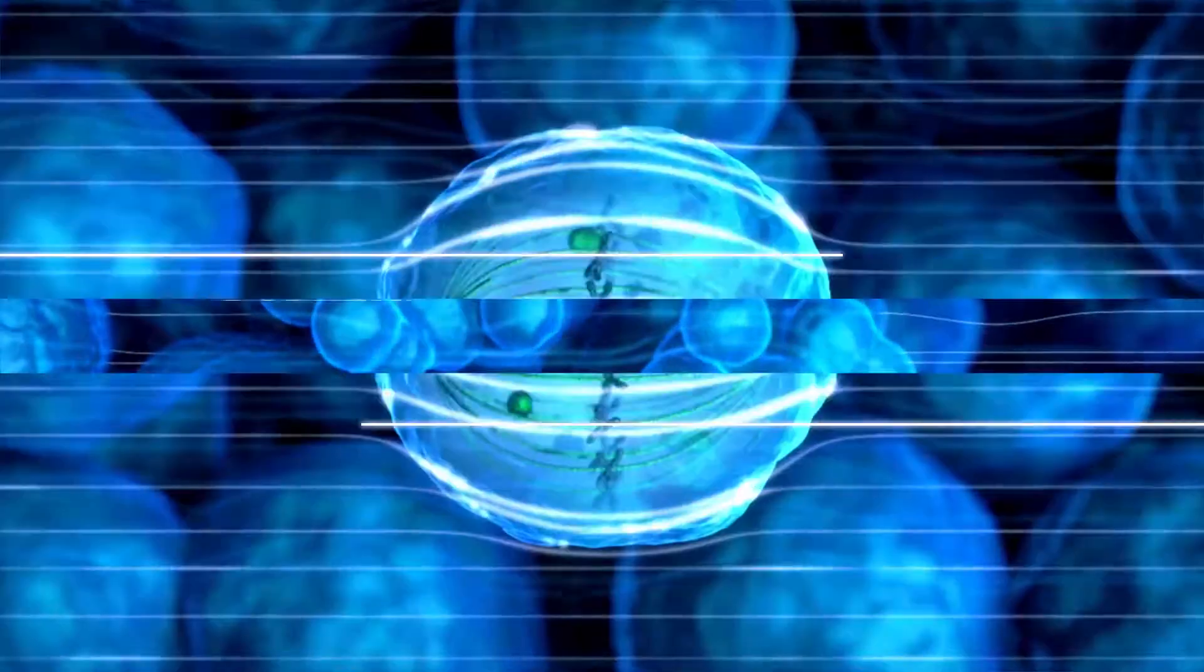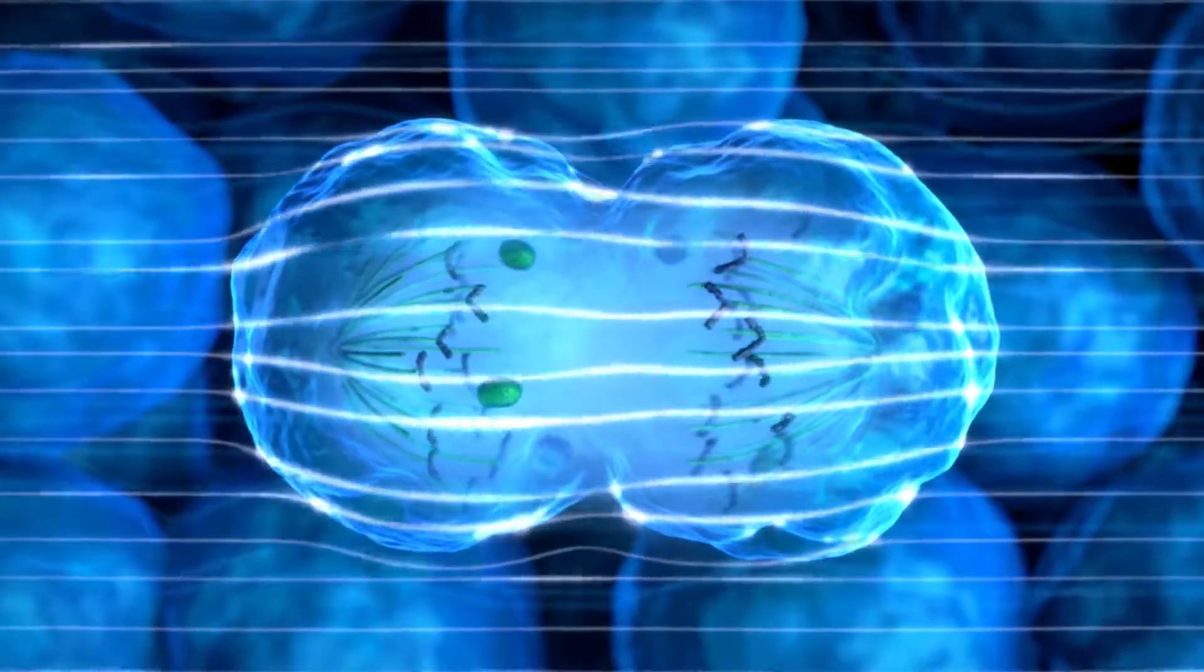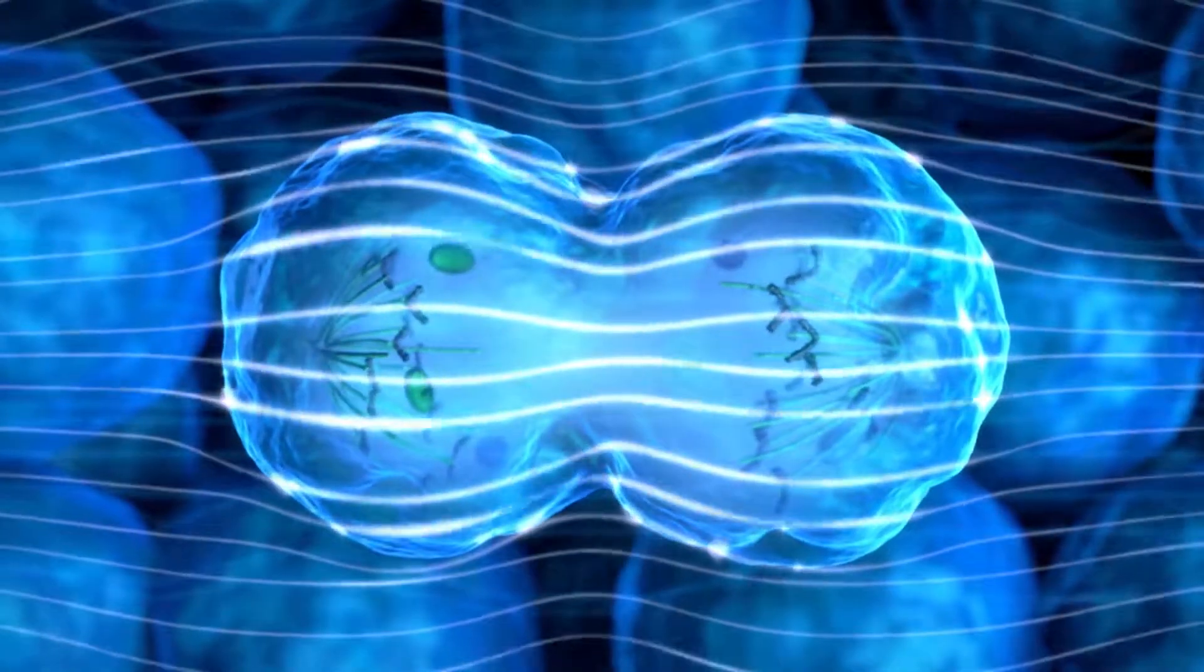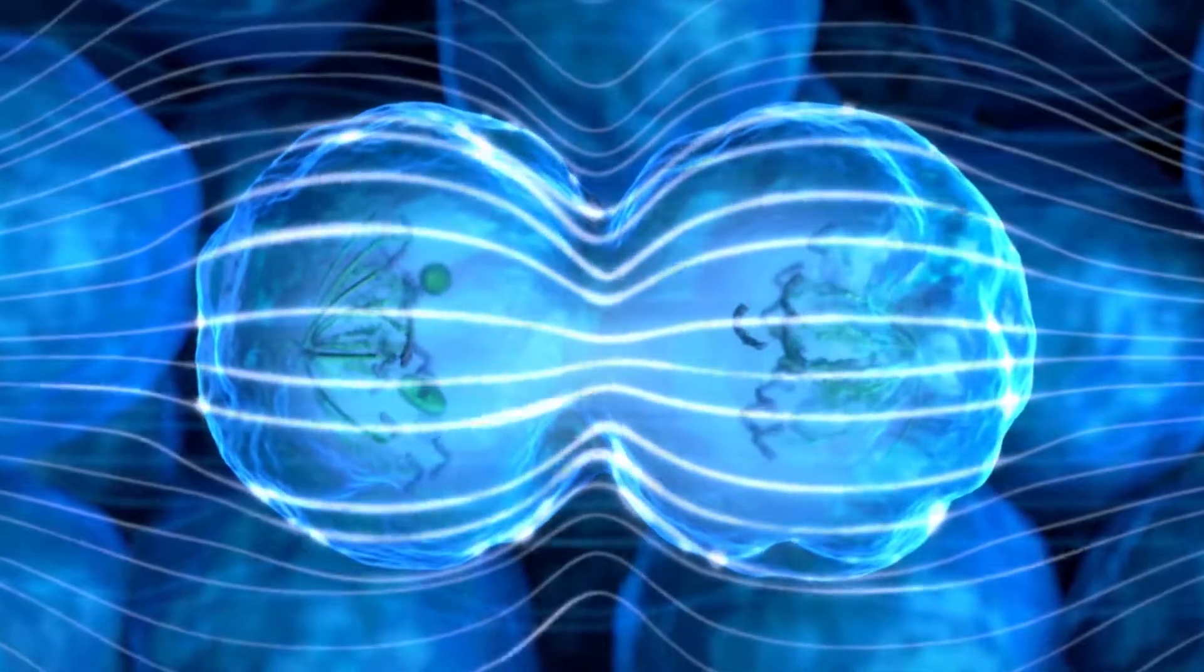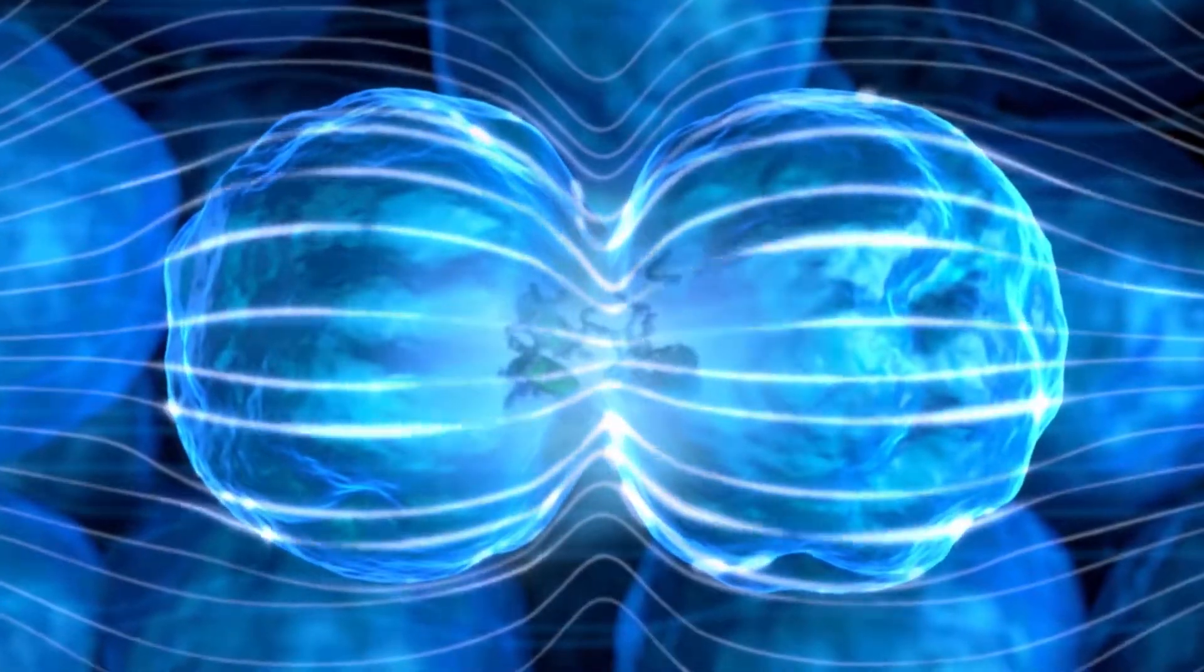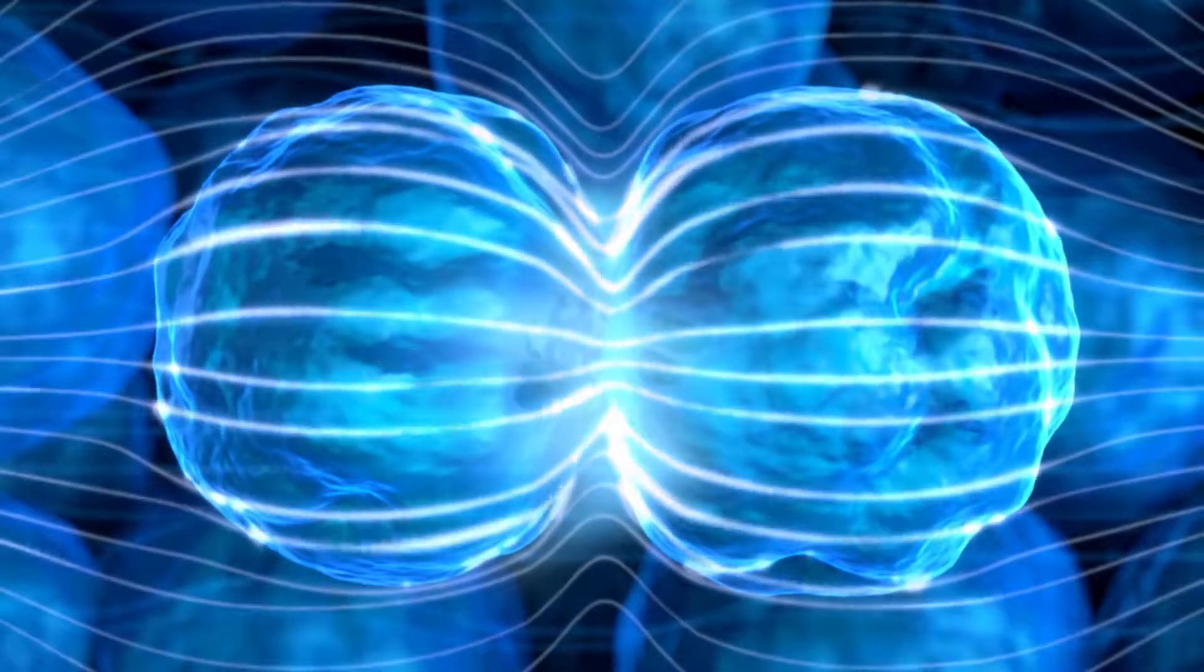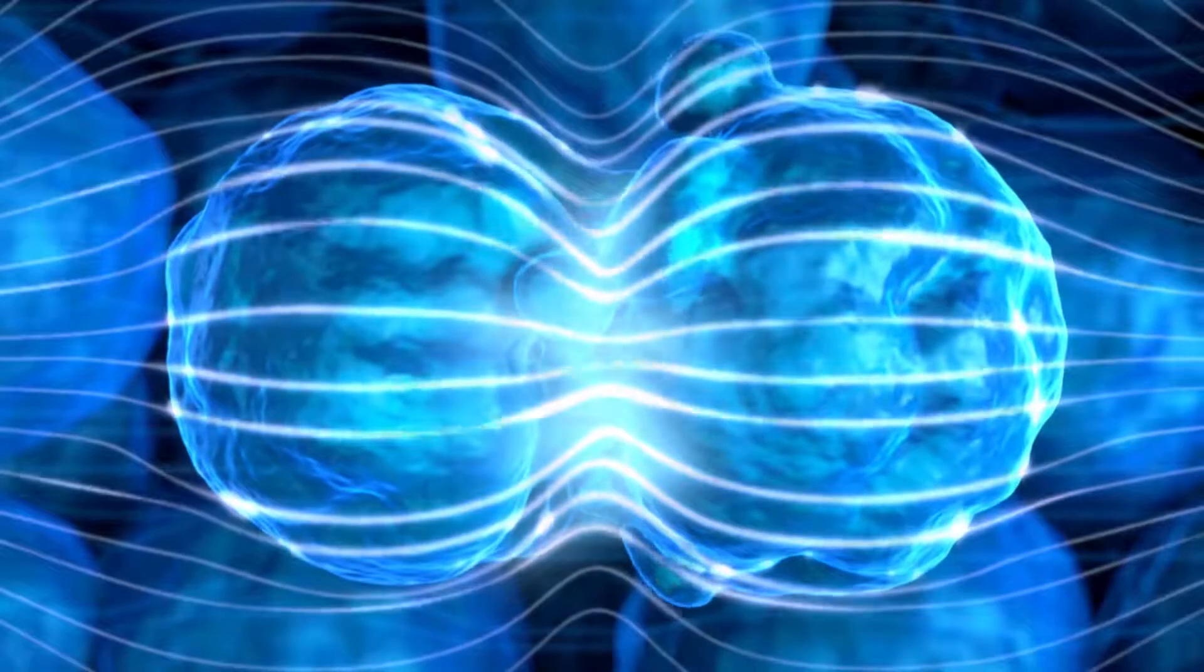In cells that manage to complete metaphase and enter cytokinesis, the hourglass shape that forms leads to a non-uniform electric field within the cell. This results in dielectrophoresis, net forces on polarizable objects toward regions of high field density, concentrating macromolecules and organelles toward the mitotic furrow, leading to structural disruption and cell fragmentation.